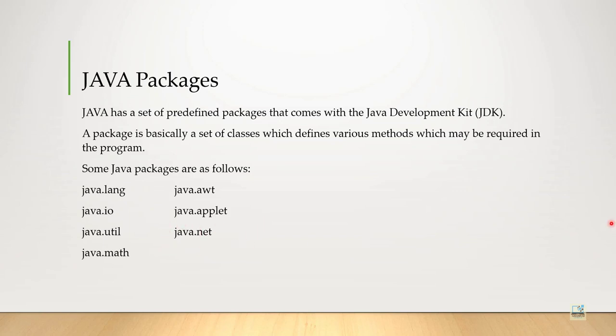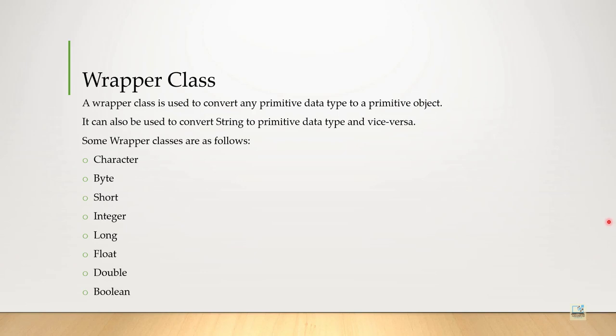Next is what is a wrapper class? A wrapper class is used to convert any primitive data type to a primitive object. It can also be used to convert string to primitive data type and vice versa.